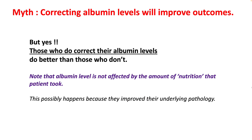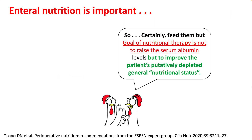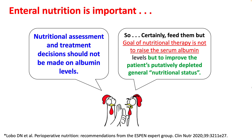Note that those patients who do correct their albumin levels do perform better than those who don't. However, the albumin levels in these patients are not affected by the amount of nutrition the patient took — this possibly happened because they improved the underlying pathology. So the goal of enteral nutrition is not to raise serum albumin; the goal of nutritional therapy is to improve the patient's depleted nutritional status. Nutritional assessment and treatment decisions should not be based on albumin levels.